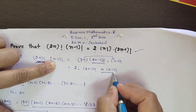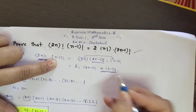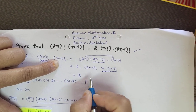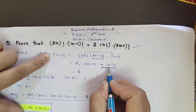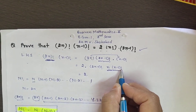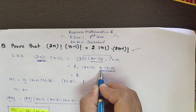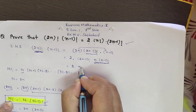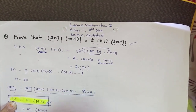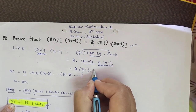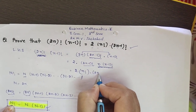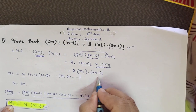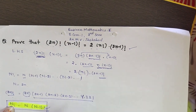Applying the factorial formula again on this term gives n × (n−1) factorial, which equals n factorial. The result is 2 × n! × (2n−1) factorial. This completes the simplification. Thank you so much.